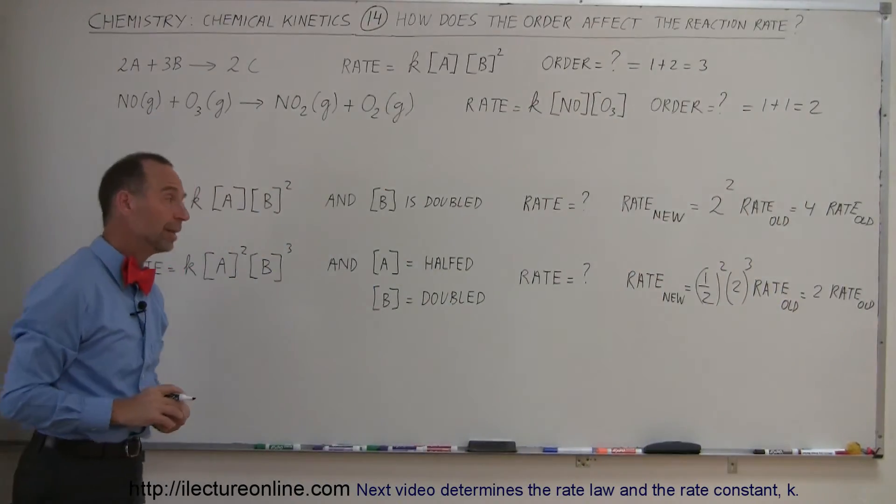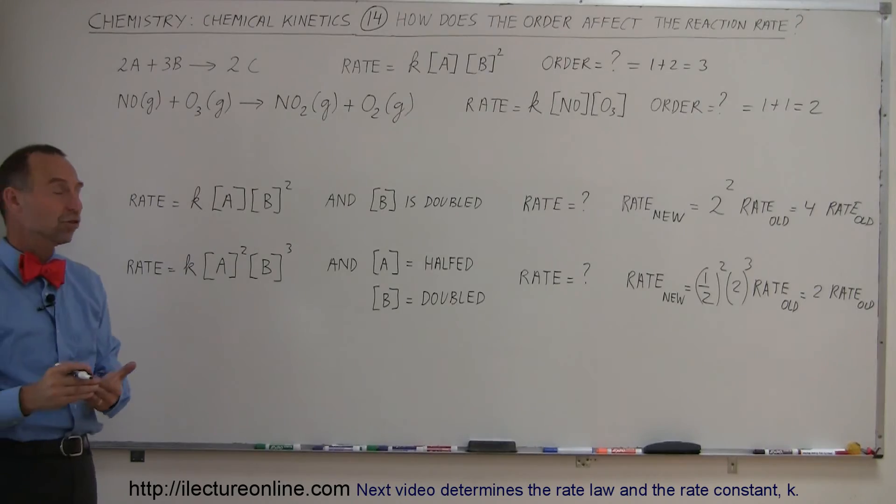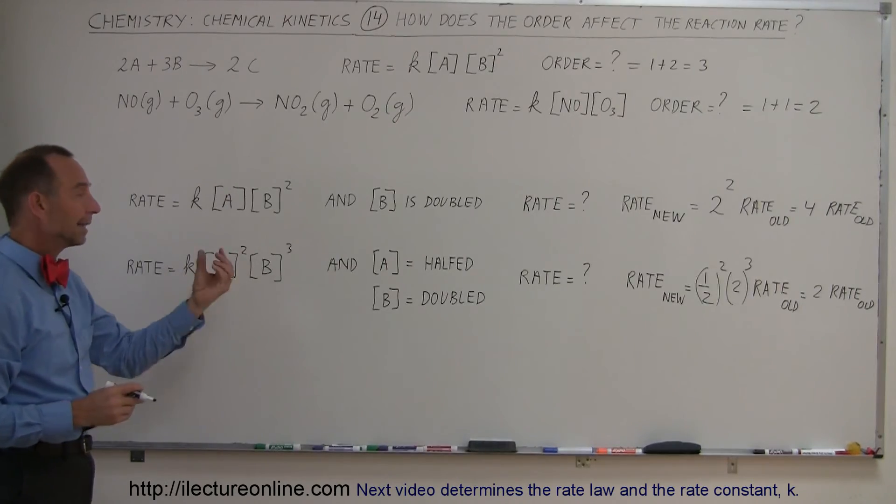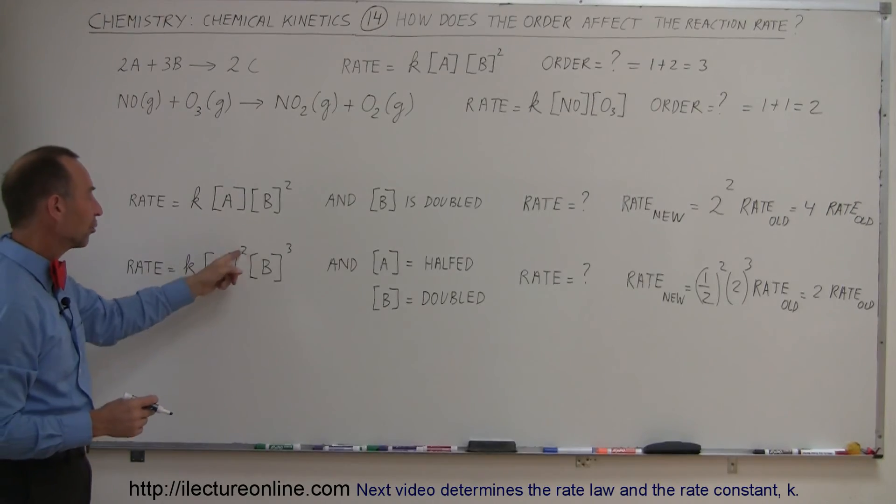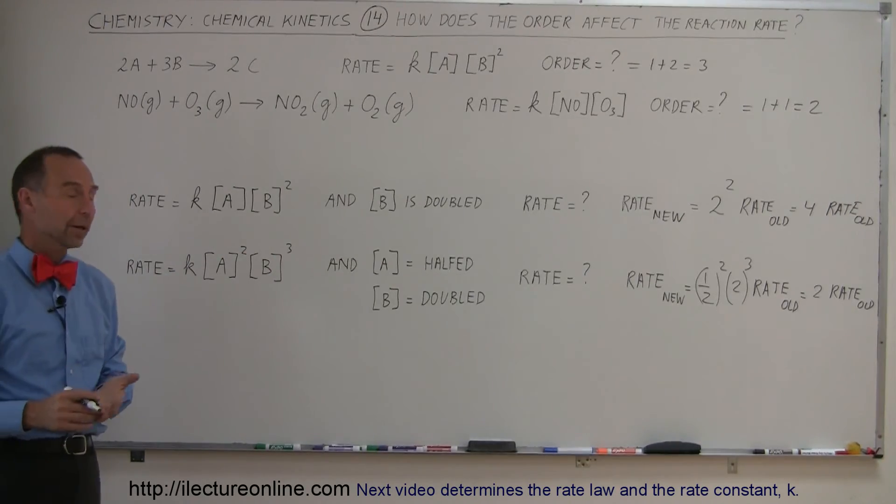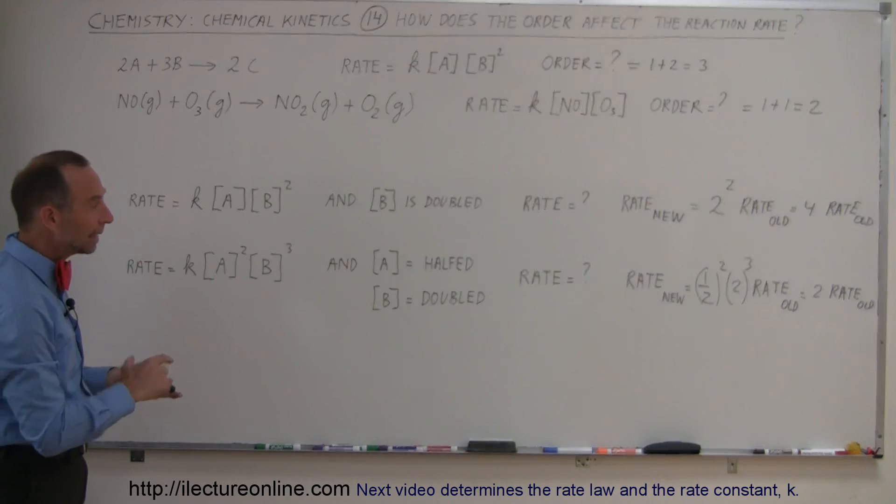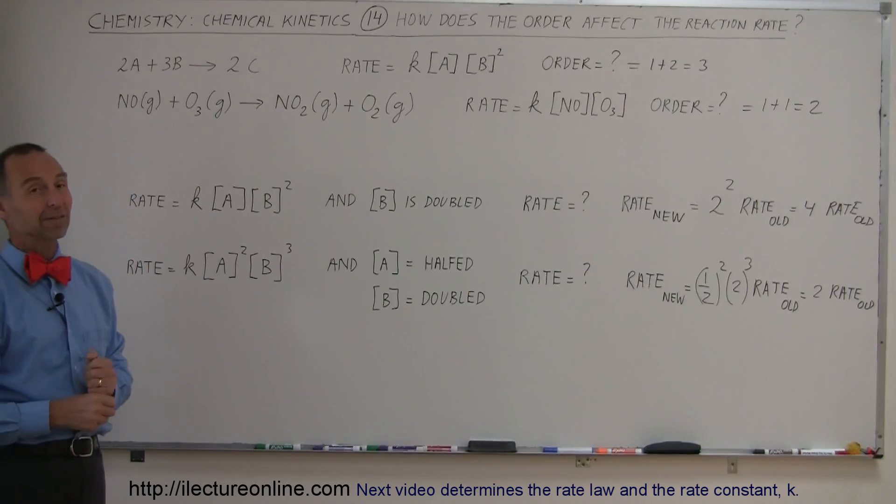And that's how you do that. Simply find out how the concentration is changed, then look at the order, and then take that number, how it's changed, it's doubled, it's halved, it's tripled, whatever it is, and then raise that to the exponent, the order of that particular reactant, and that's how you find the new rate, that's how you do that.